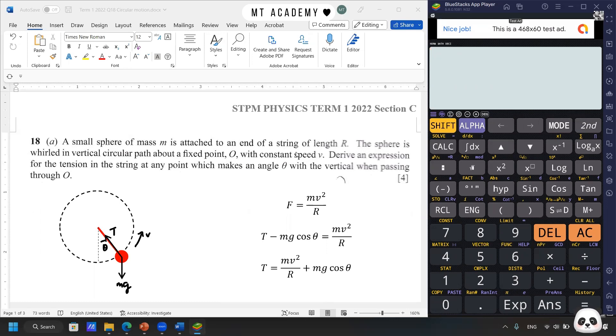Except there is a variable that is changing, I mentioned in the video. So derive an expression for the tension in the string at any point which makes an angle with the vertical when passing through. So I guess this is not something new. For those who have the Oxford textbook, you should have come across the derivations.